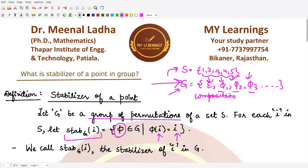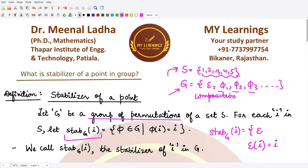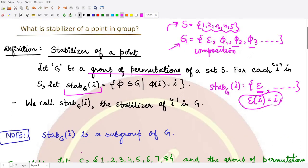One thing that comes to mind is that one member is always fixed for the stabilizer of any element: the identity permutation, because the identity permutation keeps all elements fixed. So it will surely keep i fixed as well. All such permutations that keep i fixed form the stabilizer of element i in group G, and moreover, this stabilizer is a subgroup of G.